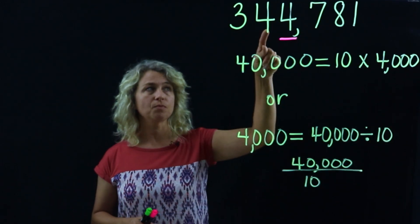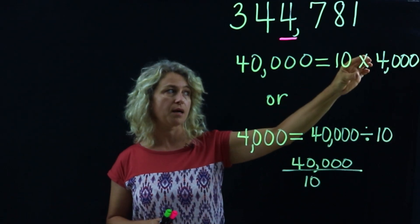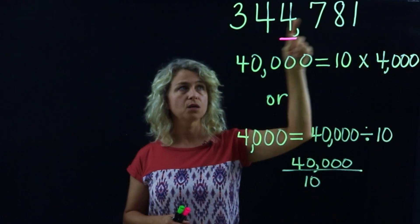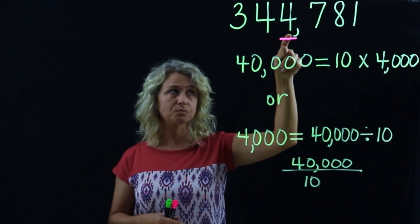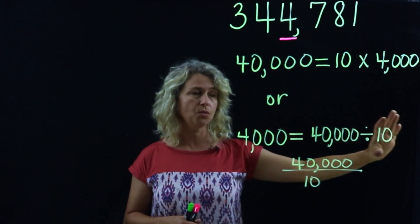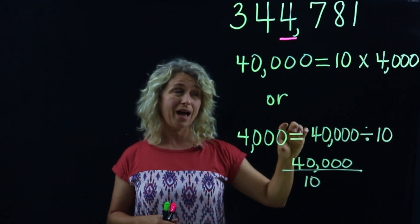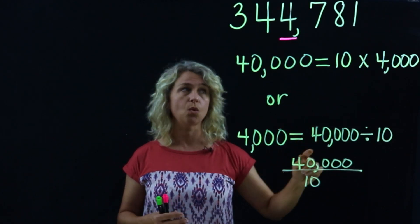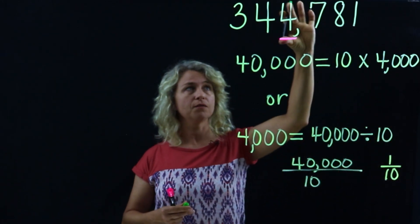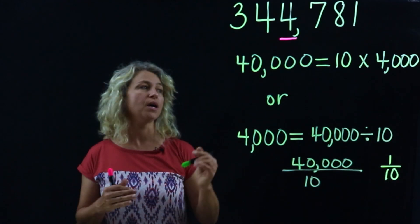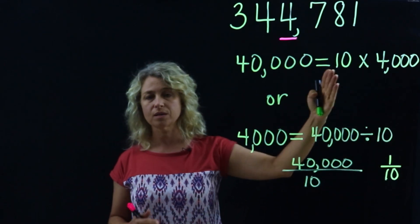Let's recap: this four is worth forty thousand. Forty thousand is ten times four thousand, so this four is ten times the four beside it. And below we've said this four is worth four thousand — four thousand is one tenth of this four.